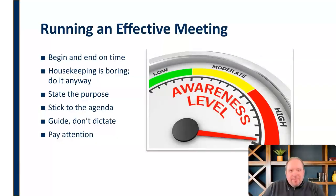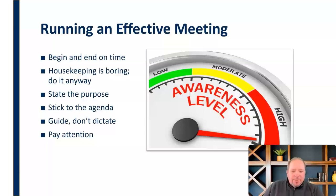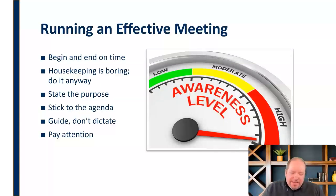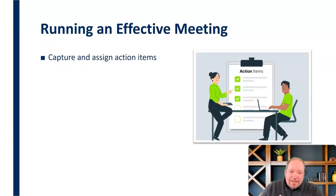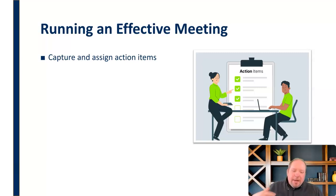You really need to pay attention to people — not only what they're saying, but their nonverbals. Are they engaged or not engaged? Do we need to pull them in somehow? As the person running the meeting, you have to pay attention to what people are doing and how things are going so you can get in front of any potential issues and make sure everybody is engaged and involved. You ought to be at a high level of awareness. In addition, we need to capture and assign any action items that come out of the meeting, recording them and assigning them to people in the group to carry out and follow up on.